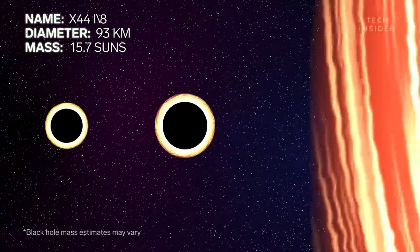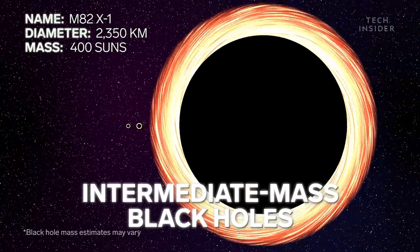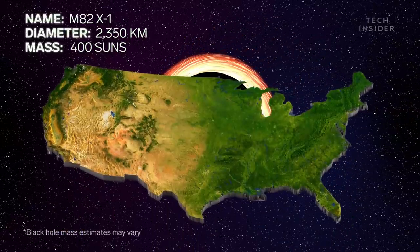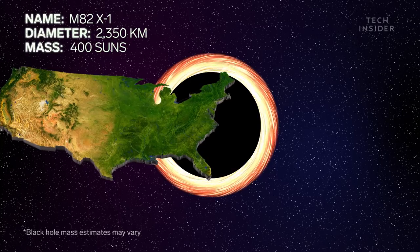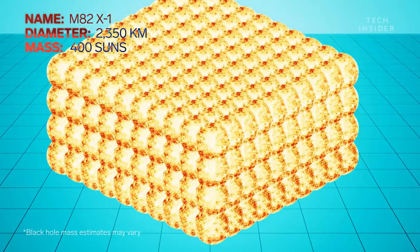Up next are the intermediate mass black holes, like this one. At 1460 miles across, it's nearly large enough to stretch from Florida to Maine. And according to some calculations, contains the mass of 400 suns.